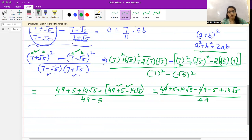Now 49 and 49 cancel out because one is plus, one is minus. These also cancel out. So you are left with 14√5 and 14√5. Now we write this as 14√5 + 14√5 over 44. 14 and 14 will give you 28. Here √5 is common in both, so this will become 28√5 over 44.